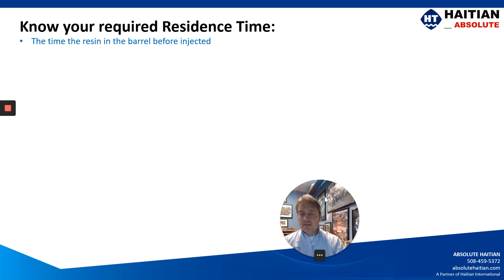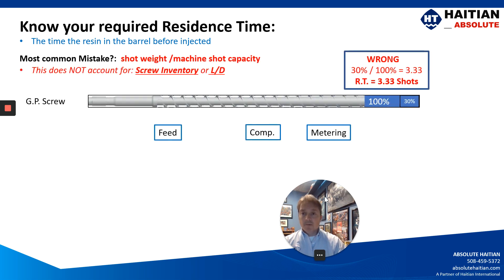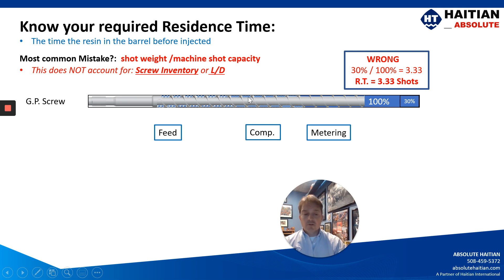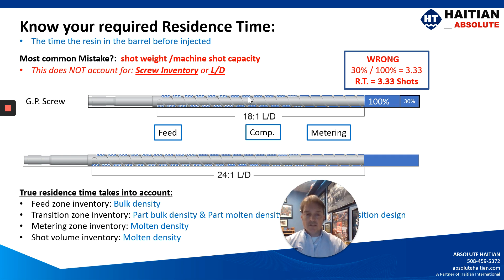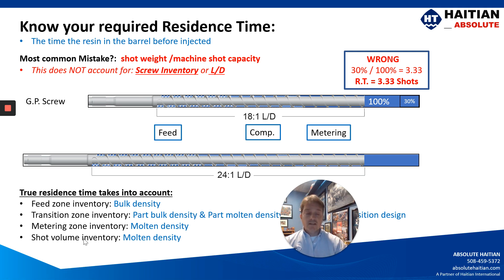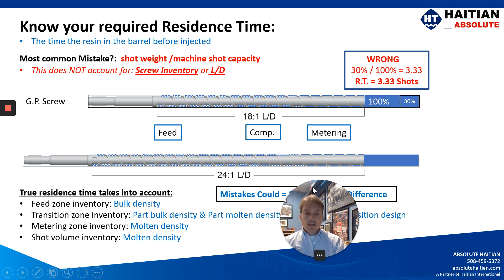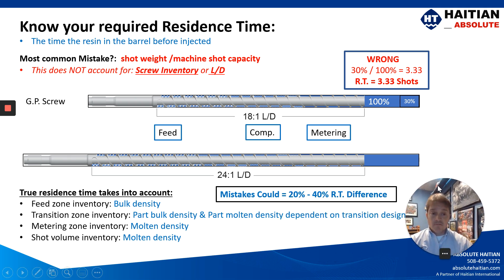How about your residence time? This is the amount of time that the resin is in the barrel. One common mistake molders make is they just divide the shot weight by the machine capacity — this is wrong because it does not include the inventory on your screw. If you're running a longer L over D screw, something like a 24 to 1, that is going to have a much larger inventory that must be calculated. Your feed zone, transition zone, and shot volume all have to be calculated into your inventory to know your residence time.